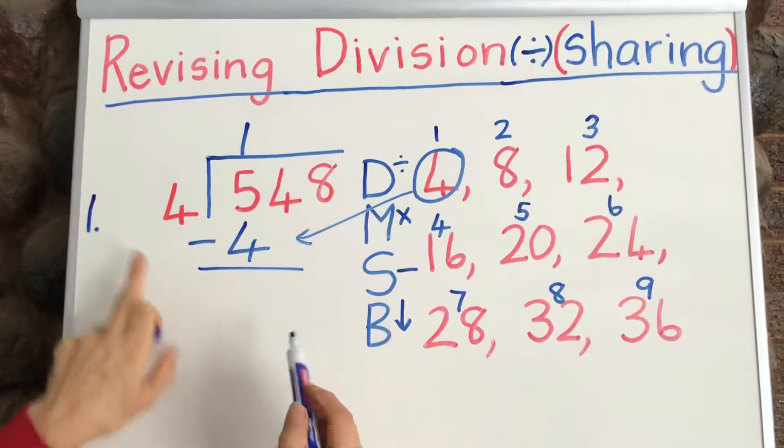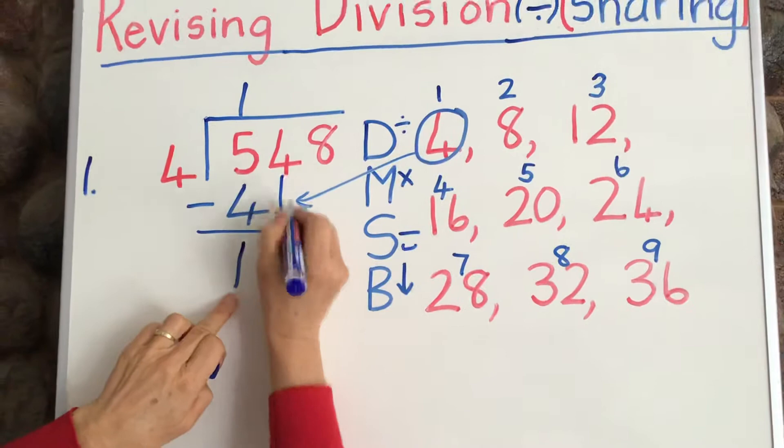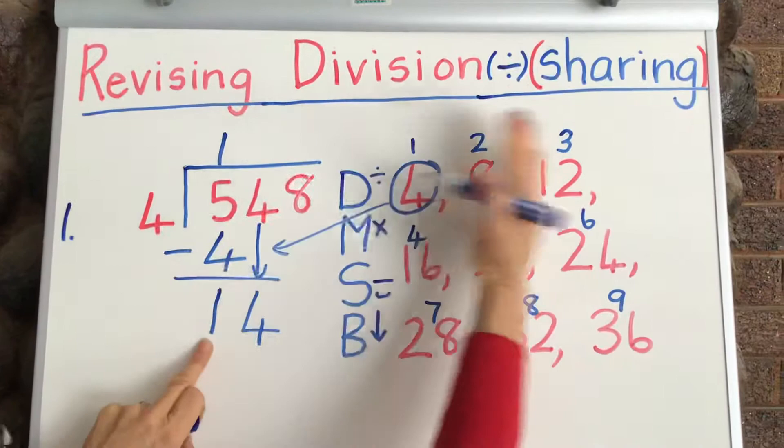So now we are going to go to the next step and that is that we say 5 minus 4 is 1. Now, then after subtract, what happens? We bring down. We bring down the 4.